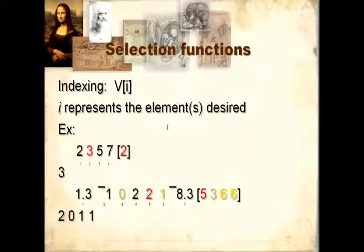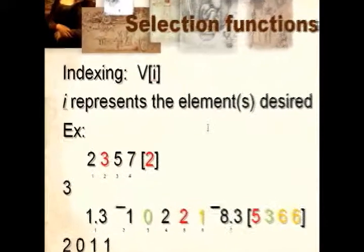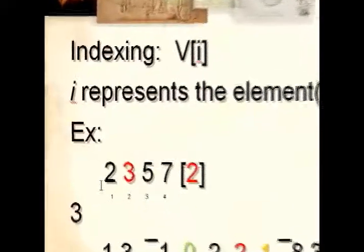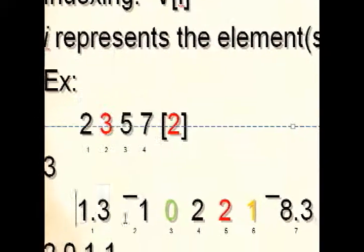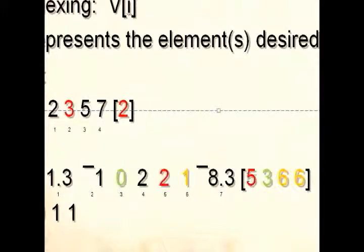Indexing is another selection function. I represents the elements desired. For example, if you want the second element of a vector of 4, using 2 will return the second element, which is a 3. Likewise, if I have a vector and I pick a certain number of elements — for example the fifth one, the third one, the sixth one, and again the sixth one —